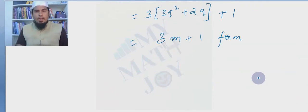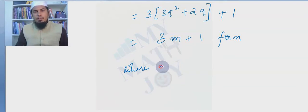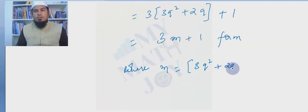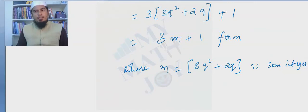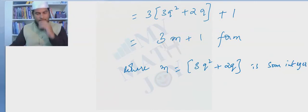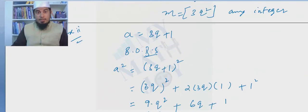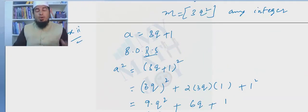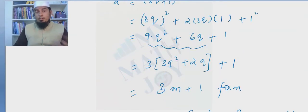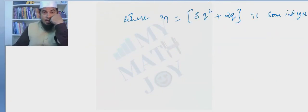In Case 3, m = 3q²+4q+1, which is some integer. So Case 3 also gives the 3m+1 form. We have now converted all three basic conditions from Euclid's lemma into only two forms: 3m or 3m+1.